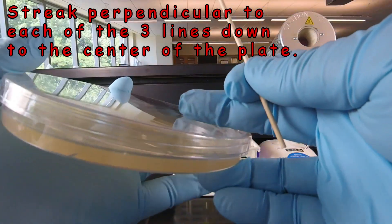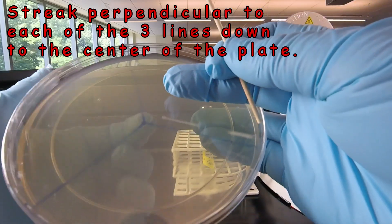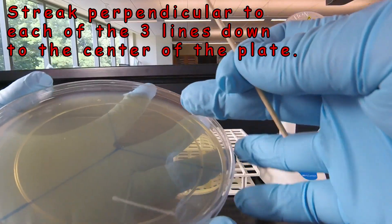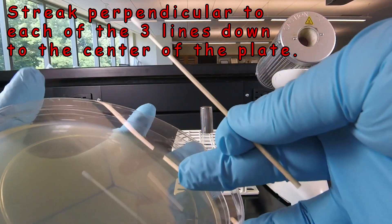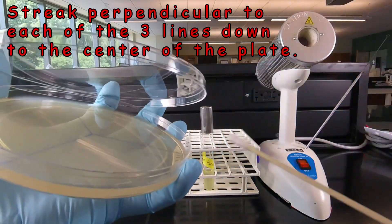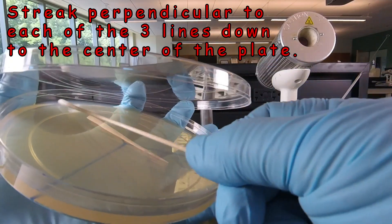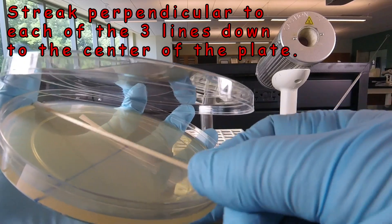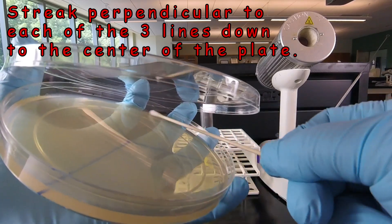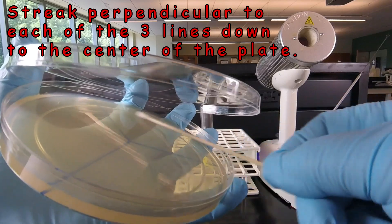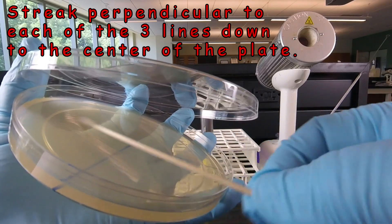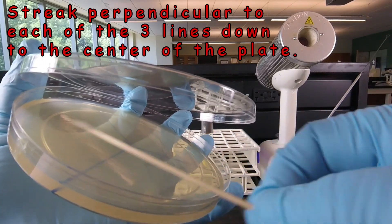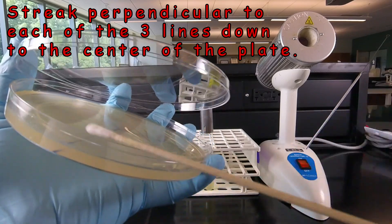Now we're going to rotate the plate and streak perpendicular to this line. Again all the way to the edge, and all the way to the center. Use the same swab. You don't have to dip it in again. So again all the way to the edge, overlapping the lines, until we hit the center.